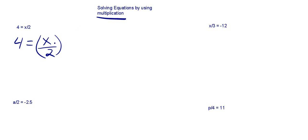So if we're going to get this x by itself, we've got to multiply it by 2. If we multiply this side by 2, we've got to multiply this side by 2. These cancel out, so we're just left with x.